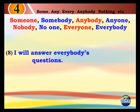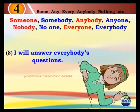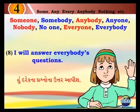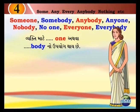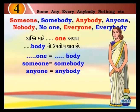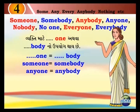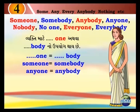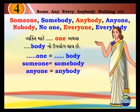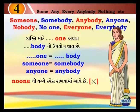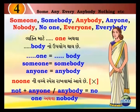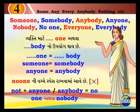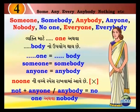I will answer everybody's questions. Vyakti maatne one atwa body no upyog thai chhe. One is equal to body. Someone is equal to somebody. Anyone is equal to anybody. No one ni vach chhe space rakhva maa aave chhe. Not plus anyone or anybody is equal to no one atwa nobody.